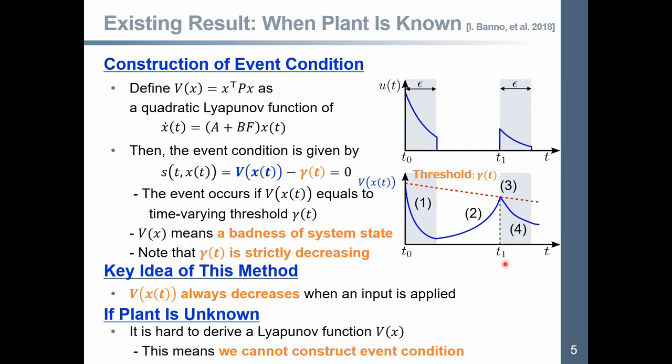These steps are used repeatedly to stabilize the system by sparse input. The key idea of this method is this: Vx t always decreases when input is applied. However, if the plant is unknown, it is hard to derive a Lyapunov function V. This means we cannot construct event condition.